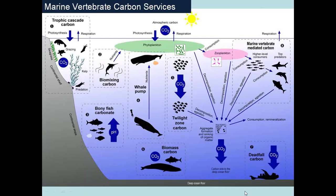This report highlights seven biological mechanisms provided by marine vertebrates that result in carbon sequestration, and one mechanism which may provide a buffer against ocean acidification. All of these mechanisms may have a role in the mitigation of climate change. The eight mechanisms of fish carbon are: first, trophic cascade carbon; second, biomixing carbon; third, bony fish carbonate; fourth, whale pump; fifth, twilight zone carbon; sixth, biomass carbon; seventh, deadfall carbon; and eighth, marine vertebrate-mediated carbon.